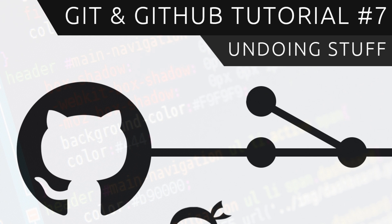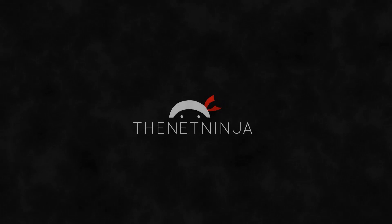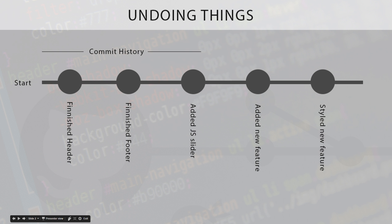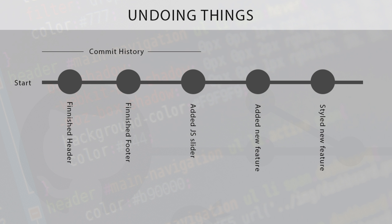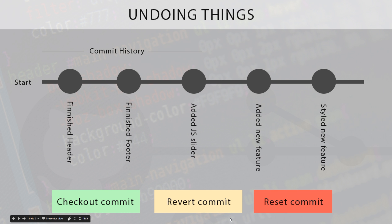Welcome to your seventh git and GitHub tutorial. In this video I want to show you how to start doing stuff for when it all goes wrong. We're at the stage where we've made some commits to our master branch — about three or four so far. I want to show you how to start rewinding things or undoing things if you've made mistakes. We're going to do these things using three different methods: checkout commit, revert commit, and reset commit.